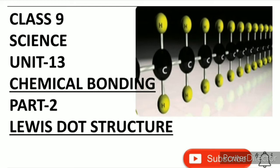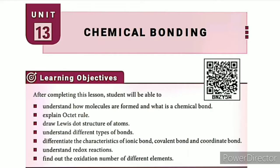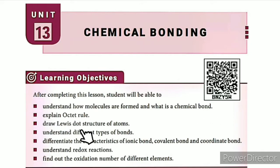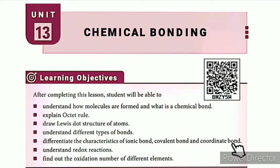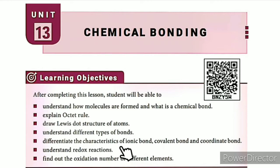Lewis Dot Structure. The learning objectives are: understand how molecules are formed and what is a chemical bond, explain the octet rule, draw Lewis Dot Structure of atoms, understand different types of bonds, and differentiate the characteristics of ionic bond, covalent bond, and coordinate bond.